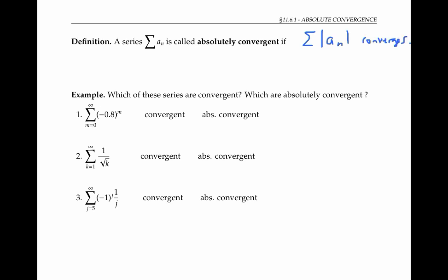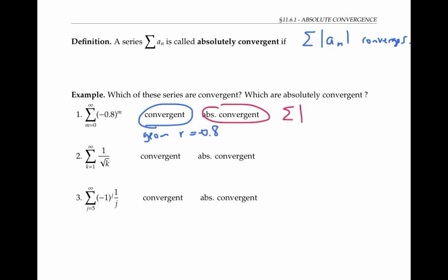Please pause the video for a moment and try to decide which of the following series are convergent and which ones are absolutely convergent. The first series is convergent because it's a geometric series with ratio r equal to negative 0.8. It's also absolutely convergent because if we take the series of absolute values, that's the same as the geometric series with a ratio of 0.8, which is also convergent.